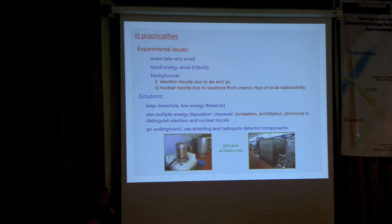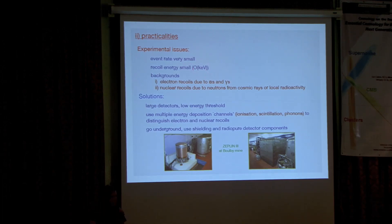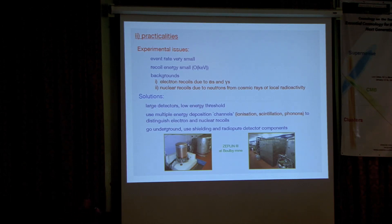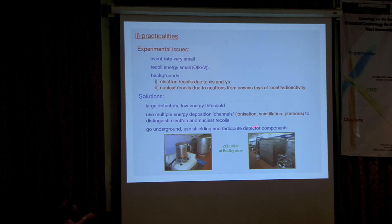In terms of practicalities: firstly, because particles are weakly interacting, the event rate is very small — less than one event per month per kilogram of detector. The recoil energies are typically very small, of order keV. Backgrounds are also an issue: electron recoils caused by alphas and gammas deposit energy in the detector, and neutrons from cosmic rays and local radioactivity can cause nuclear recoils in exactly the same way that WIMPs do. To address the small event rate you build a bigger detector; to address the low energy you push the energy threshold down as far as possible. For backgrounds, the energy deposited shows up in one of several channels — ionisation, scintillation, or phonons — and experimentalists typically use targets where they can use two of these channels to differentiate nuclear recoils from electron recoils.